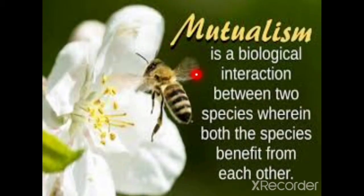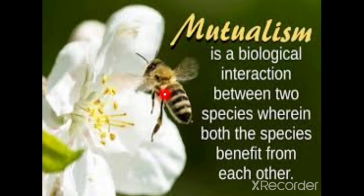The second type of relationship is mutualism. Mutualism is a biological interaction between two species wherein both species benefit from each other — it is a symbiotic relationship where both organisms are beneficial to one another. For example, honeybees take nectar from flowers for their food.